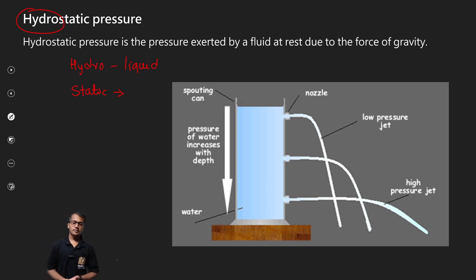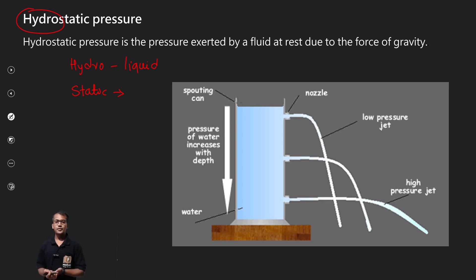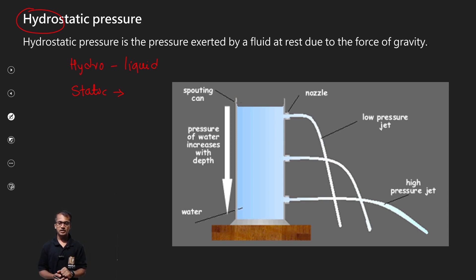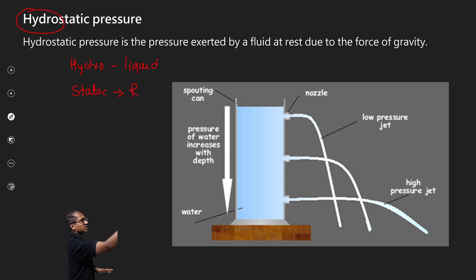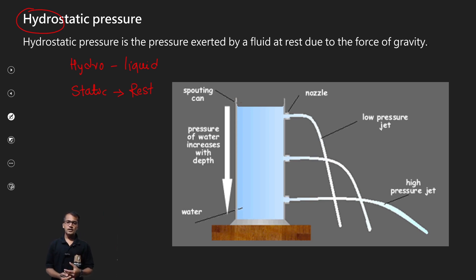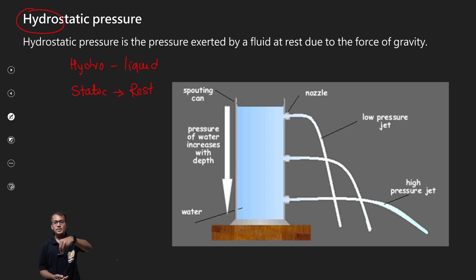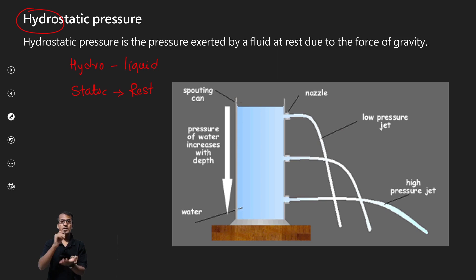So in fluid mechanics, we have fluid dynamics and fluid statics. Static condition means the fluid is at rest — it is not having any motion. So static means rest. Fluid can be liquid or gas. So when a fluid is at rest, there is pressure applied on the surface.